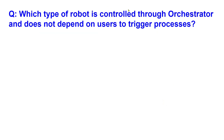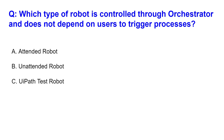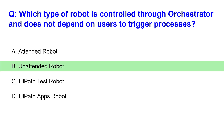The next question: which type of robot is controlled through Orchestrator and does not depend on users to trigger the process? The triggering happens from Orchestrator. Options: attended robot, unattended robot, test robot, or TAPS robot. The answer is B — unattended robot. I hope you got all the answers correct. Thank you for watching, let's move on to our next topic.